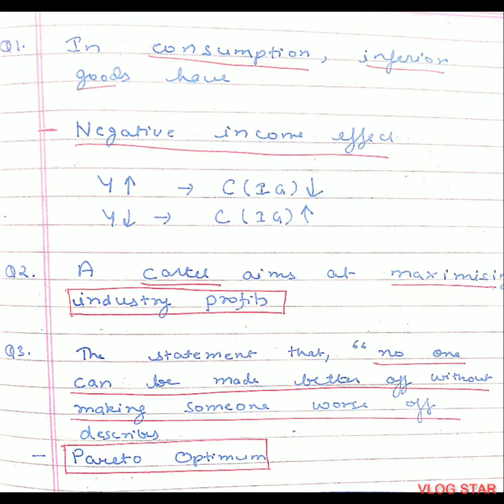Question 1. In consumption, inferior goods have a negative income effect because when income rises, the consumption of inferior goods goes down, and vice versa. That's why it has a negative income effect.